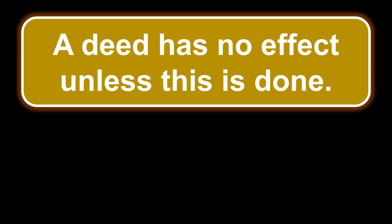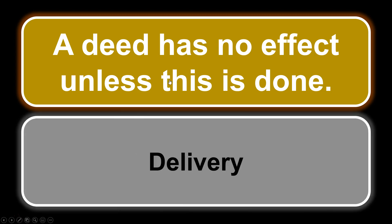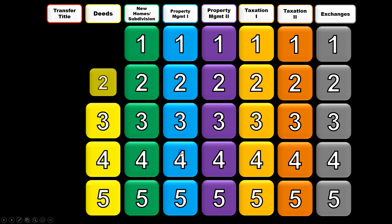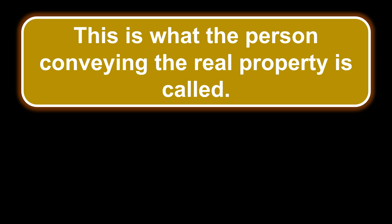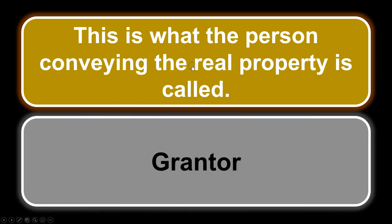A deed has no effect unless this is done. When we think of a deed, what needs to be done for it to be effective? It doesn't need to be recorded or acknowledged, but it does need to be delivered. Delivery has to be done for a deed to be effective. This is what the person conveying the real property is called — the grantor. The person receiving the property is the grantee. Grantor is the person conveying the real property.